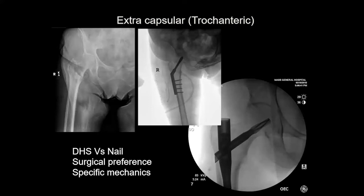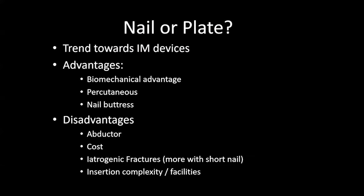For extracapsular fractures you can use either a sliding hip screw or a nail. These days we do more nails in the US for certain reasons, and a lot of that is surgical preference, but there are specific mechanics you have to understand to know why you use individual devices. Our devices are designed to counteract the mechanics that are caused by the fracture. There's a big trend towards intramedullary devices to provide that purchase effect, but they are more costly, and there are probably more fractures caused by them if you use a short nail and you haven't got the complexity of the facility to put them in.